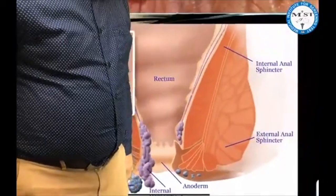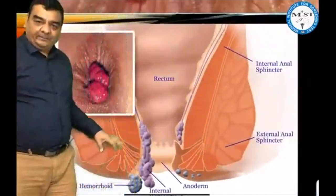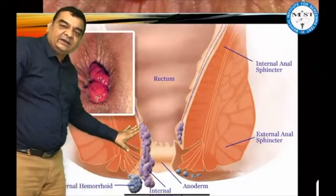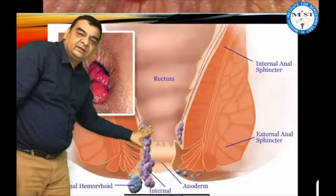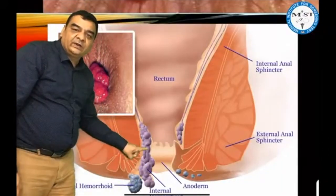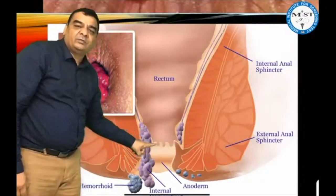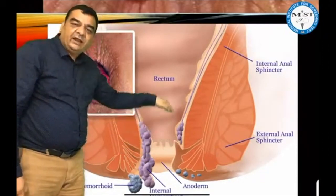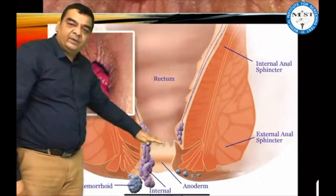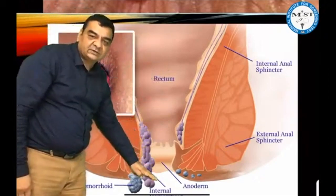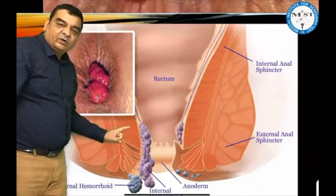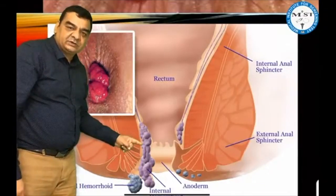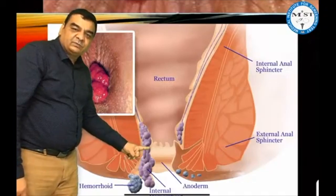Looking at more pictures of these piles or hemorrhoids, this area is the anal canal area. Here you can see there is a squamous-columnar junction — above this it is columnar, and below this it is squamous. The hemorrhoids or piles are actually the prolapse of the anal cushions.